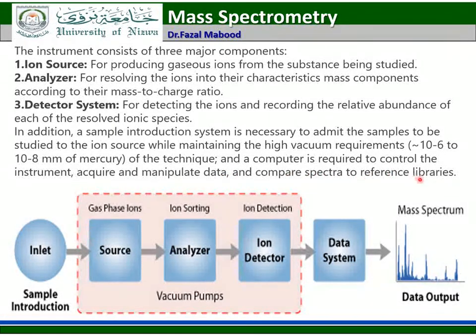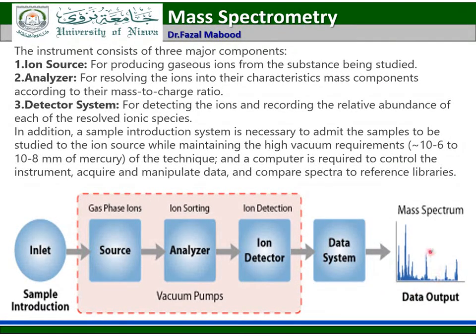Here you can see the inlet system, the ionic source, the mass analyzer, and the detector. Along with the detector there is the data system — the computer — and from this we obtain the mass spectrum.